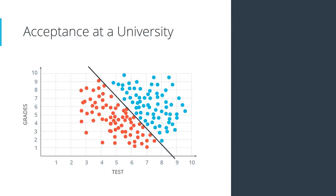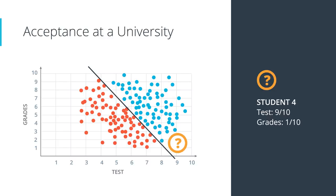Let's look more carefully at this model for accepting and rejecting students. Say we have student 4 who got 9 in the test but only 1 in the grades. According to our model, this student gets accepted since it's placed over here in the positive region of this line. But we don't want that — if your grades were terrible, no matter what you got in the test, you won't get accepted. So our data should look more like this instead. This model is much more realistic, but now we have a problem: the data can no longer be separated by just a line.